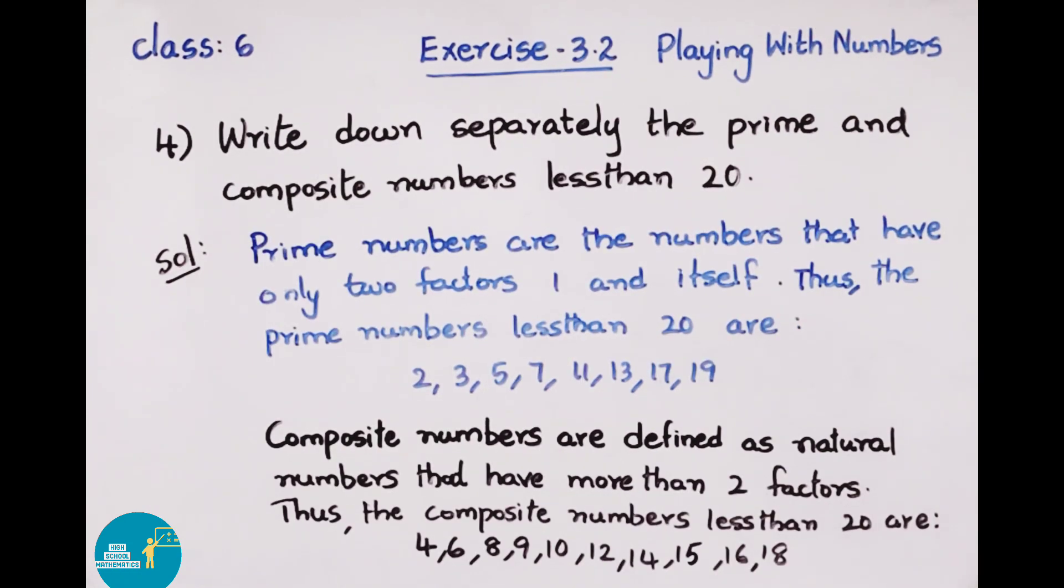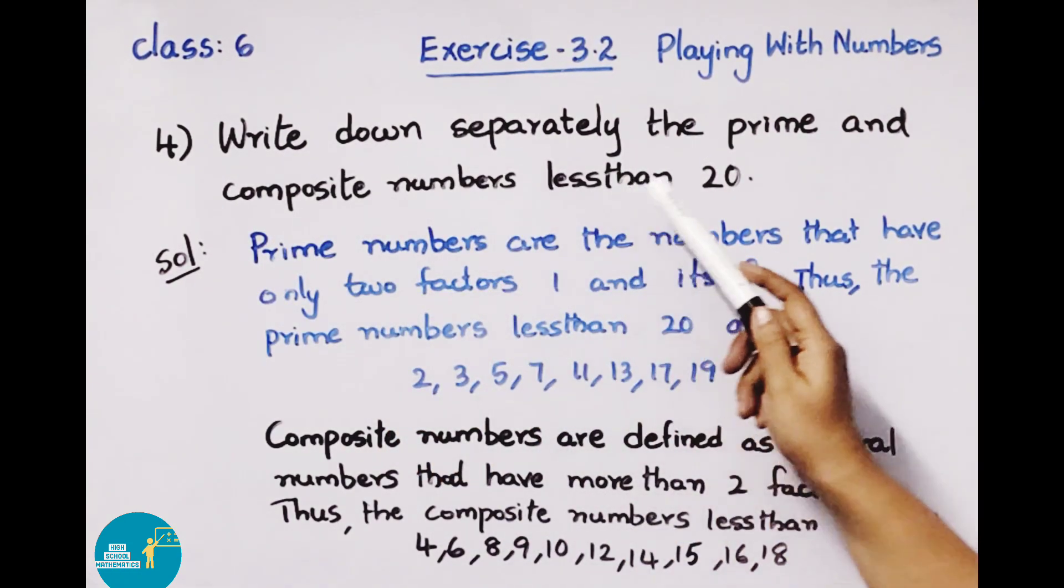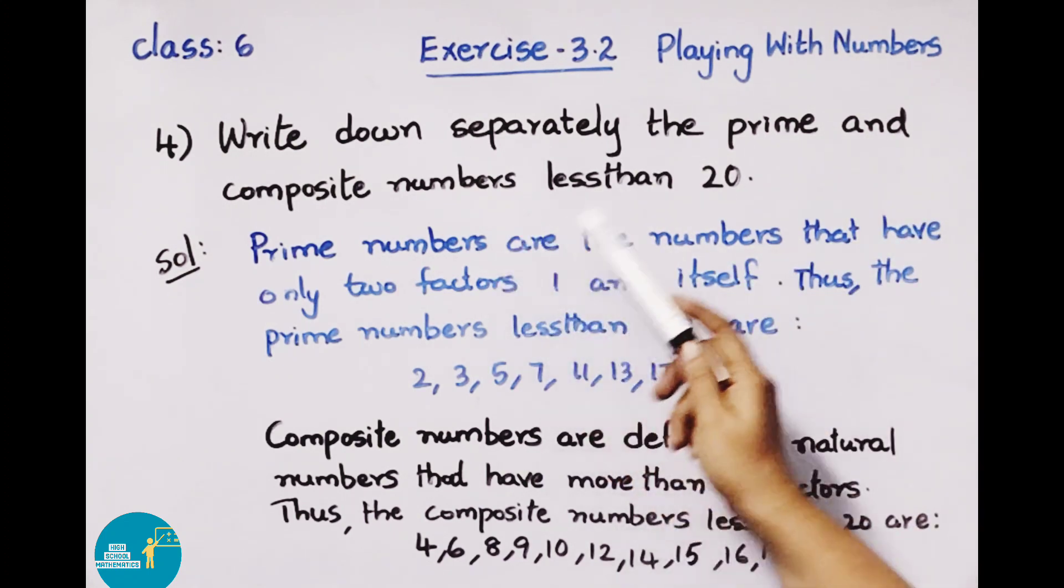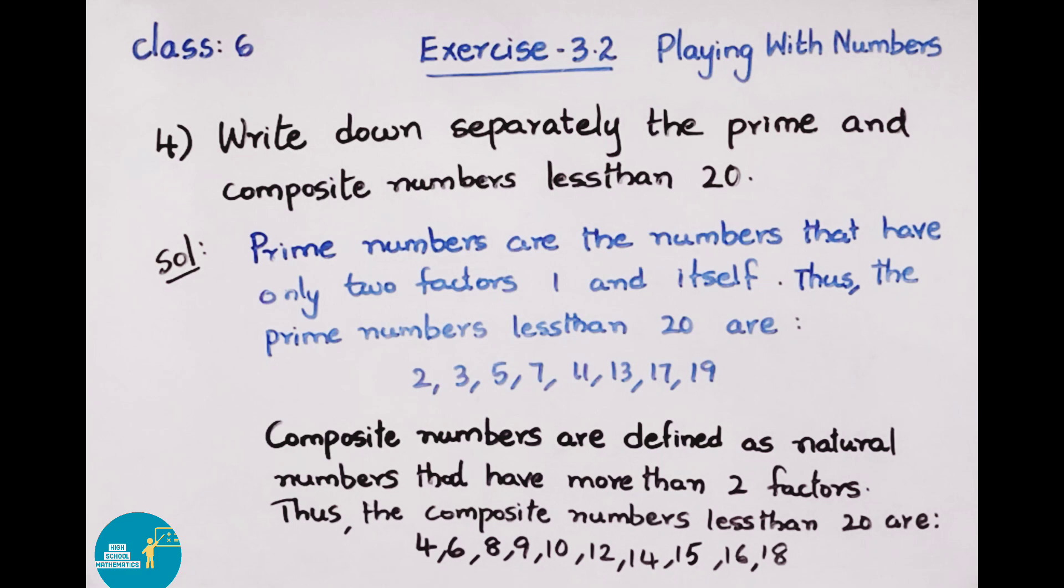Fourth question: Write down separately the prime and composite numbers less than 20. Solution: First, let's look at prime numbers. Prime numbers are the numbers that have only two factors: one and itself. Prime numbers have only two factors: one and itself.